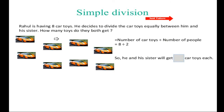Rahul is having eight car toys. He decides to divide the car toys equally between him and his sister. How many toys do they both get? Here in the question, we need to divide the number of car toys between the number of people.